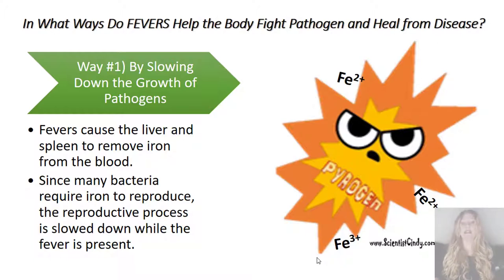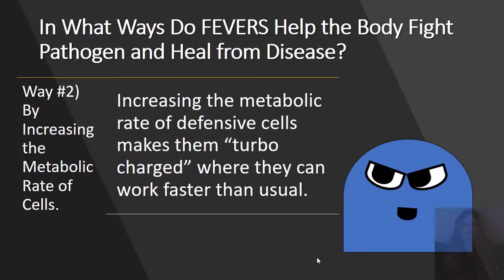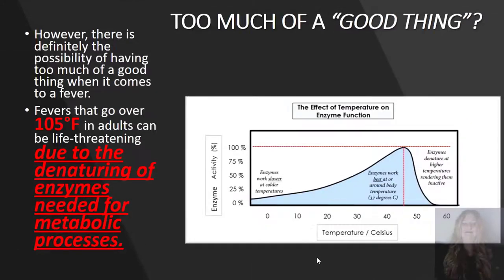In what ways do fevers help the body fight pathogens and heal from disease? Way number one is by slowing down the growth of pathogens. Fevers cause the liver and spleen to remove iron from the blood. Since many bacteria require iron to reproduce, the reproductive process is slowed down while the fever is present. Way number two is by increasing the metabolic rate of cells. Increasing the metabolic rate of the defensive cells makes them turbocharged so they can work faster than usual. However, fevers that go over 105 degrees Fahrenheit in adults can be life threatening, due to the denaturing of enzymes needed for these metabolic processes.